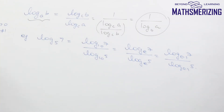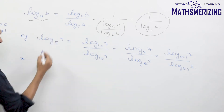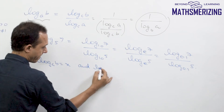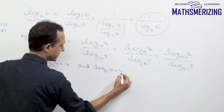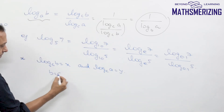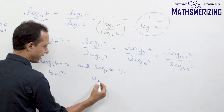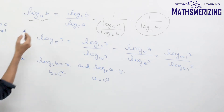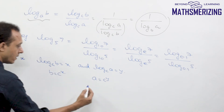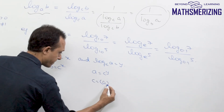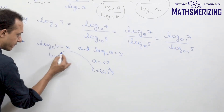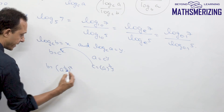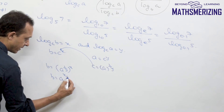Now let's see how we prove this property. Let log B base C equal x and log A base C equal y. Then we can write B as C to the power x and A as C to the power y. To express B in terms of A, we note that C equals A to the power 1 upon y. Substituting, B equals A to the power 1 upon y, all to the power x, which gives B equals A to the power x upon y.